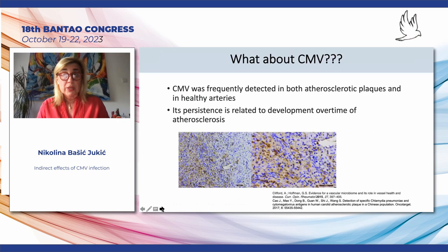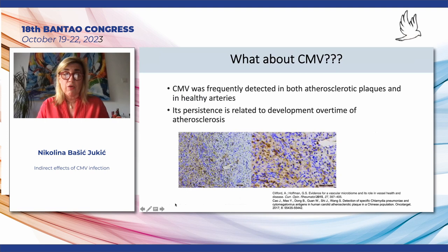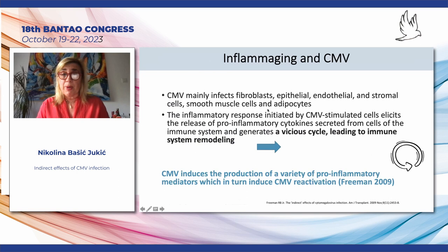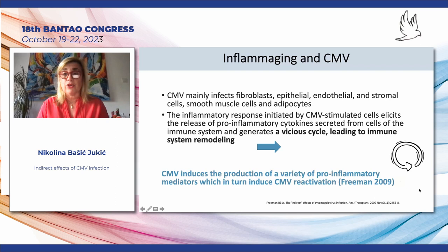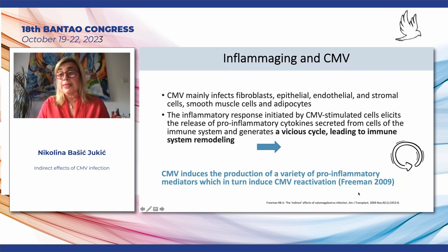So what about CMV? I am finally coming to CMV as a potential promoter of vascular aging. CMV was frequently detected in both atherosclerotic plaques and in healthy arteries, and its persistence is related to the development of atherosclerosis over time. CMV may infect fibroblasts, epithelial, endothelial, and stromal cells, smooth muscle cells, but also adipocytes. The inflammatory pulse initiated by CMV-stimulated cells elicits the release of pro-inflammatory cytokines from immune system cells, generating a vicious circle leading to immune system remodeling. CMV may induce production of pro-inflammatory mediators that in turn induce CMV reactivation.